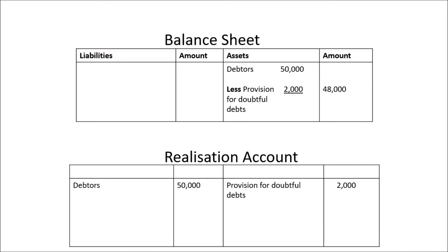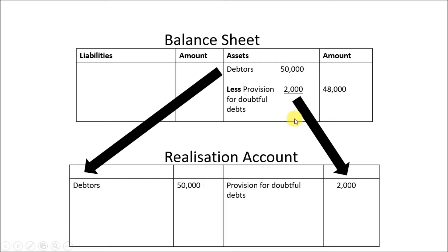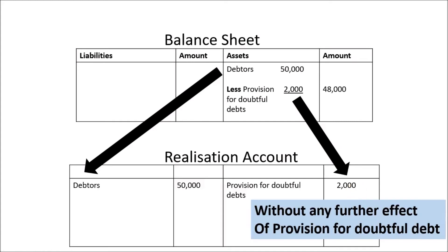When you are preparing realization account, you can see here, debtors are not transferred at net value. Debtors are transferred on the debit side at gross value, and provision for doubtful debt is transferred on the credit side. And please remember, there is no further treatment for provision for doubtful debt — it is only shown on the credit side. As far as debtors are concerned, the treatment is what you have done before. But as far as provision for doubtful debt is given, it is only transferred on the credit side of realization account, and there is no further effect which you are going to show in the realization account.